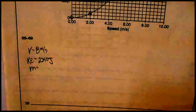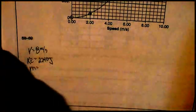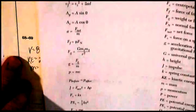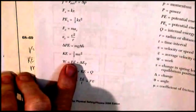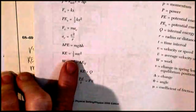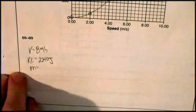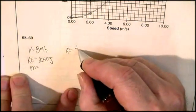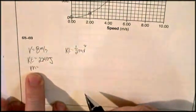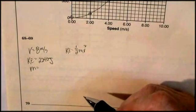Now on my formula sheet, under mechanics, because this is a mechanical event, I've got a bunch of formulas. But I've got kinetic energy is 1 half mv squared. Kinetic energy is equal to 1 half mv squared. And they want mass. So I've got to get mass by itself.